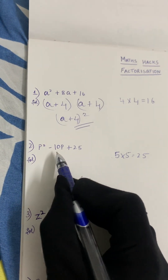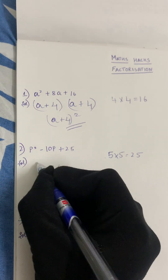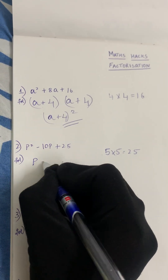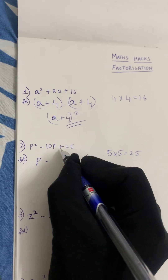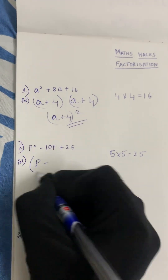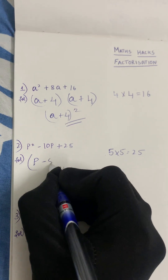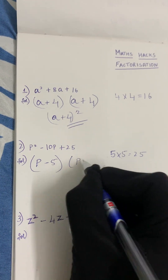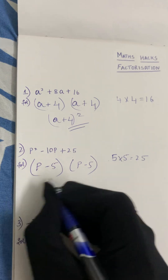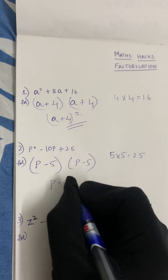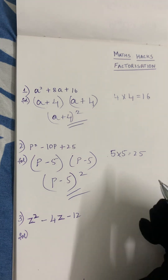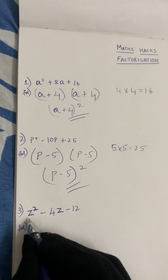We get the middle term. Now, the sign here will be minus because the third term is plus and the middle term is minus — we take the sign of the middle term. So p minus 5 and once again p minus 5. We write p minus 5 once and put a square. That is our answer.